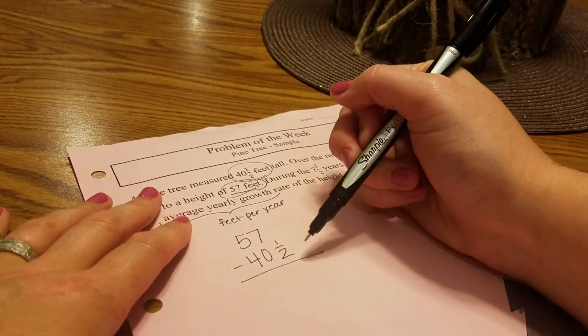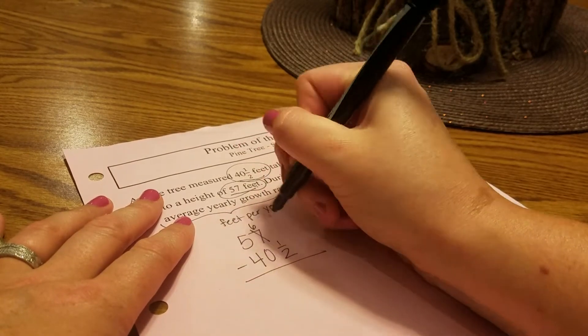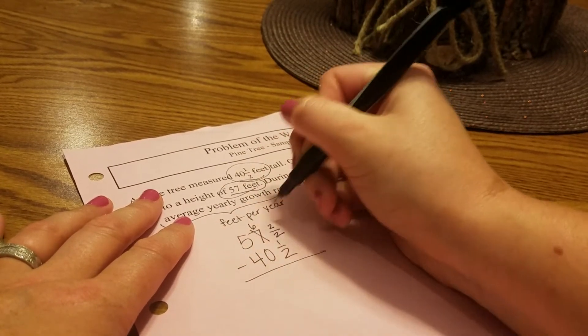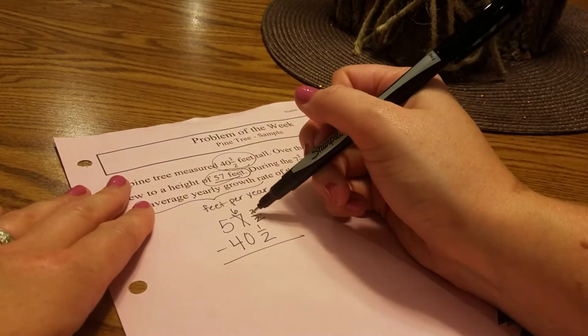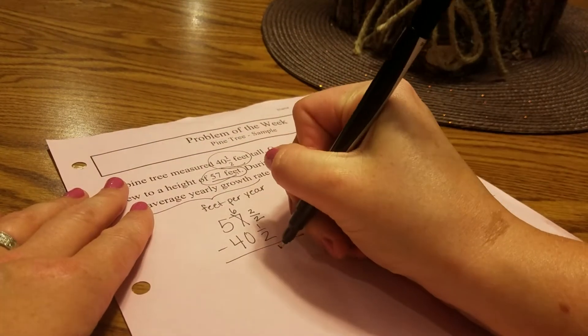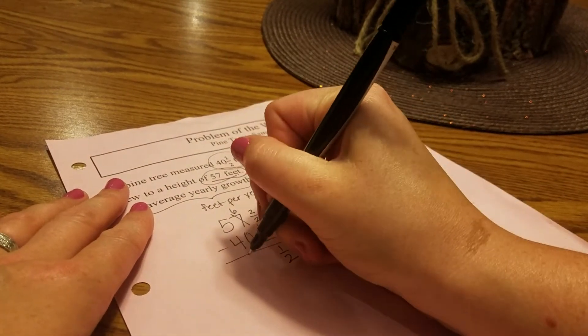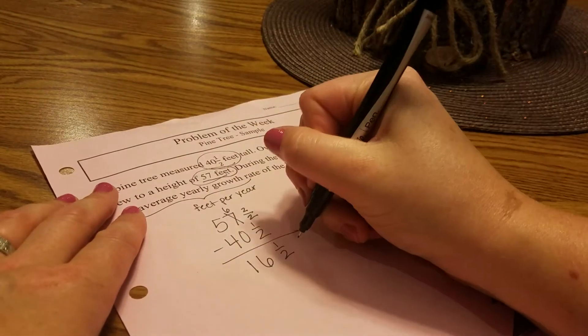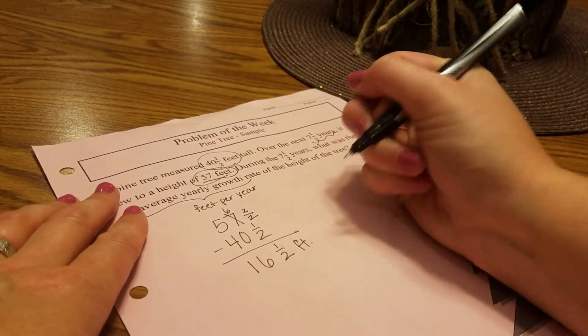57 minus 40 and a half. We actually have to borrow. This is going to become a six and this is a hole. So we put a hole in the fraction spot. One hole minus a half is one half, and 56 minus 40 is going to be 16. So it grew 16 and a half feet.